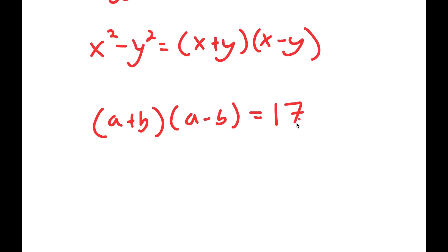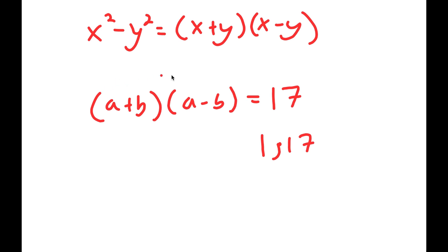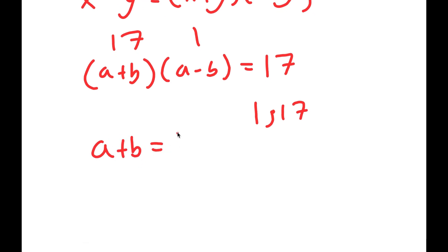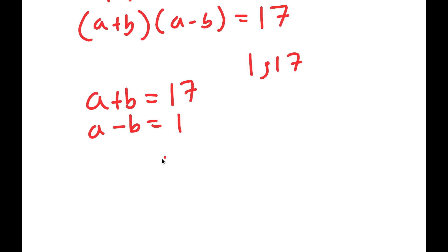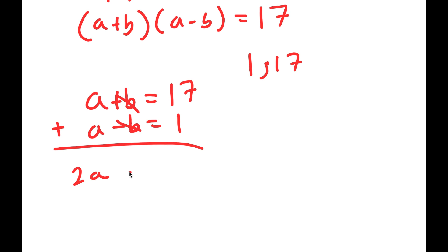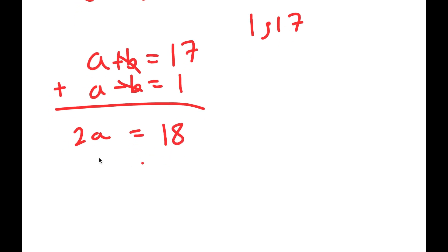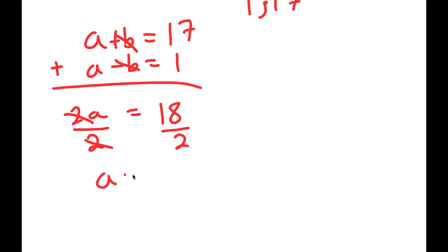The only factors of 17 are 1 and 17, meaning one of these two expressions must equal 17 and the other must equal 1. Since a plus b is greater than a minus b, we get a plus b equals 17 and a minus b equals 1. Adding these two equations together: 2a equals 18, so dividing both sides by 2 gives a equals 9.